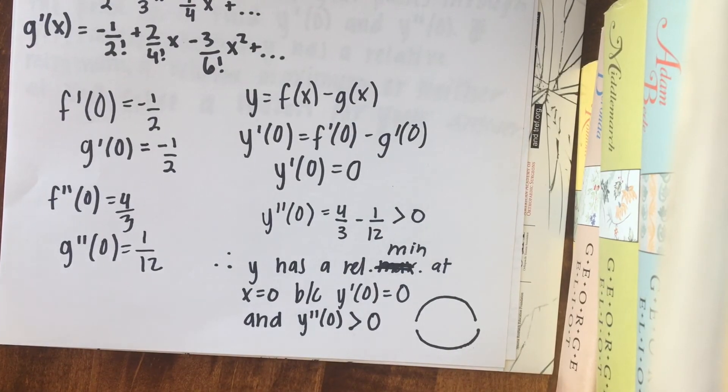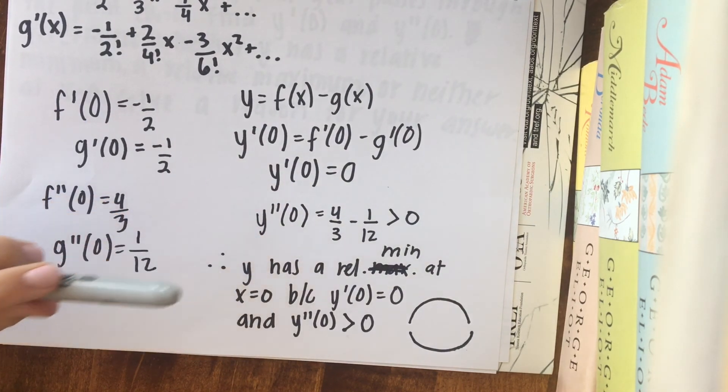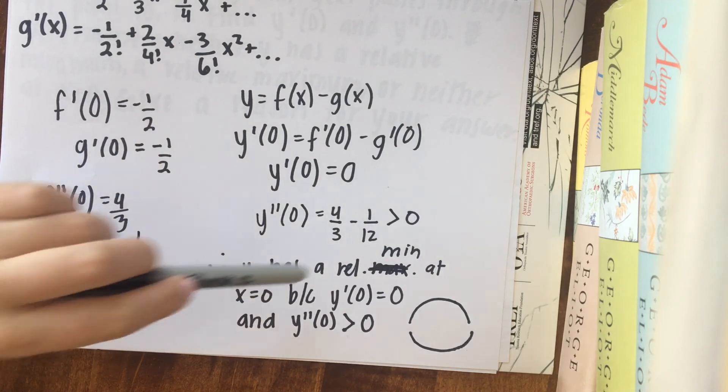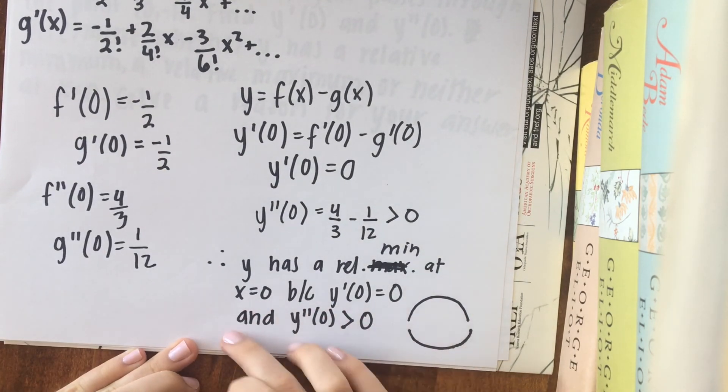And the point set up for this problem, it's going to be 4 points. You're going to get 1 point for evaluating this correctly, 1 point for evaluating that correctly, and then 1 point for your conclusion, which is going to be the relative minimum part, and then 1 point for this reasoning, which is that.